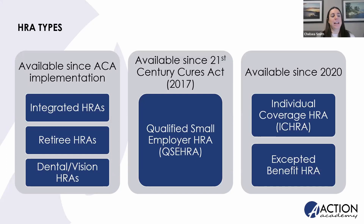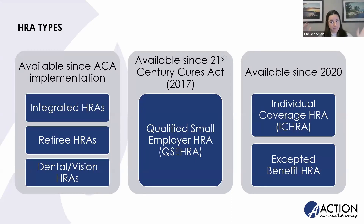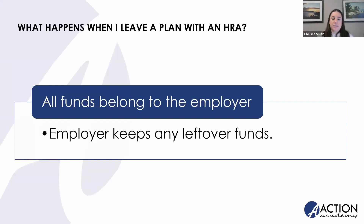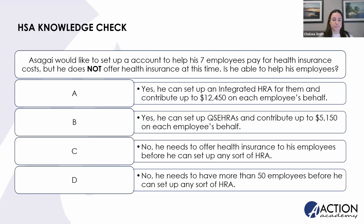That draws our HRA types to a close. I would organize it in my head as either must be with an insurance plan or must not be with an insurance plan, and then why. Unlike HSAs, all funds in the account belong to the employer — and therefore the employer keeps the funds if a person leaves their employment. The money doesn't belong to the employee.